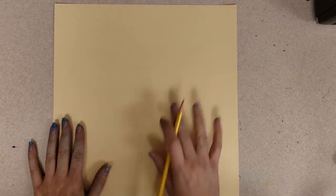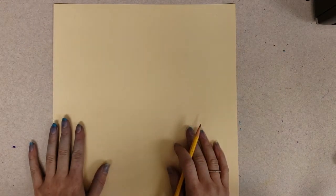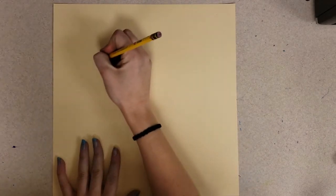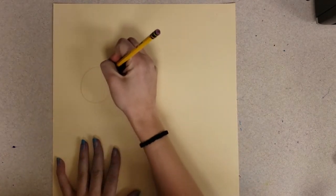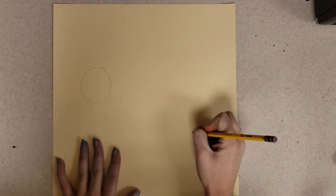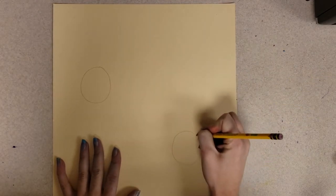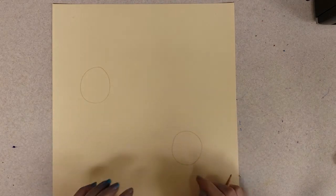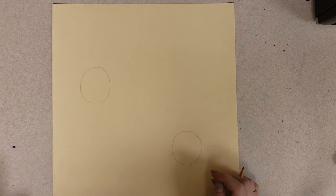You can put them anywhere on your paper, we just don't want them too close together. So I think I'll put one right here and I'll put another one right here. They're not perfect circles and that is okay because flowers aren't always perfect.